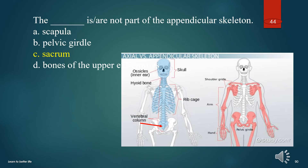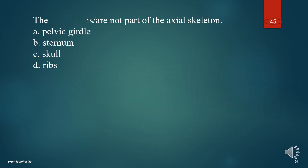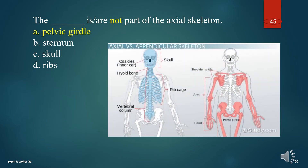The sacrum is part of the axial skeleton. What is not part of the axial skeleton? A. Pelvic girdle. B. Sternum. C. Skull. D. Ribs. The answer is A. Pelvic girdle.